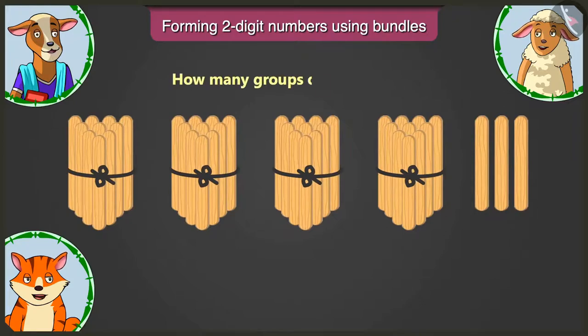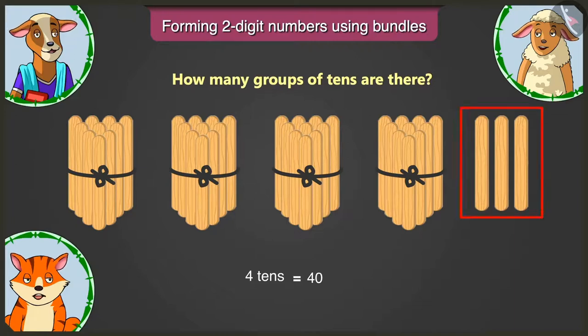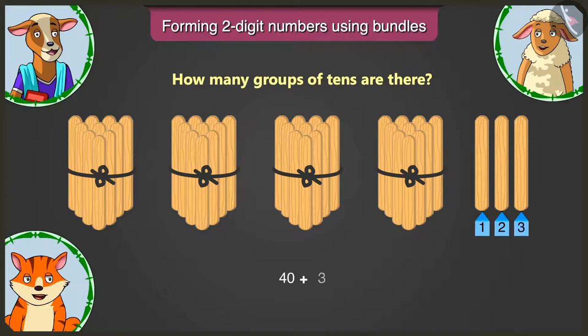Yes. How many groups of tens are there? There are four groups of tens, meaning four tens. Four tens means 40. Now besides the bundles of tens, how many sticks are left? There are three sticks left. Adding 1, 2 and 3 to 40 makes 43.